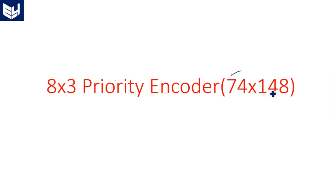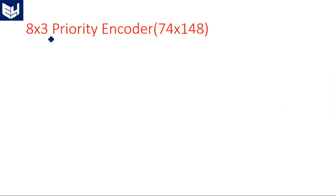74148 is a priority encoder which is 8-by-3 — 8 inputs and 3 outputs. 74138 is a 3-to-8 decoder, so don't confuse those. There are several ICs such as 74139 as well, so memorize the IC numbers first. Now let us see the logic symbol.